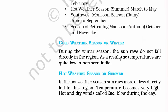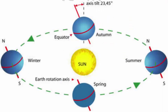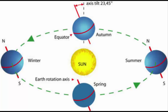Cold weather season, or winter: during the winter season the sun rays do not fall directly on the region; as a result the temperatures are quite low in northern India. To explain this, I'm going to pop up a picture. During winter, our earth is in such a position that it is slightly tilted away from the sun's rays. As a result, the sun rays do not fall on the equator but on the southern hemisphere, which is below the equator.